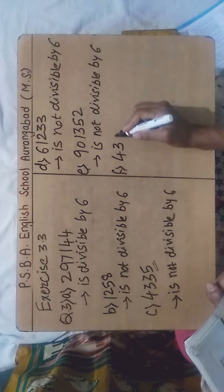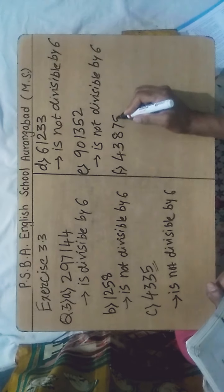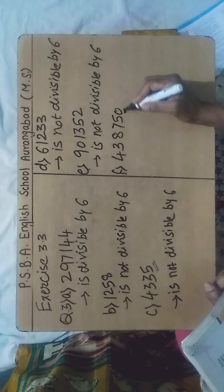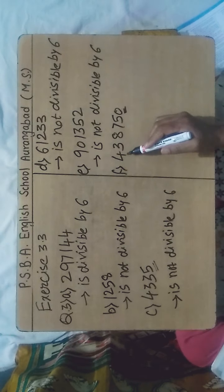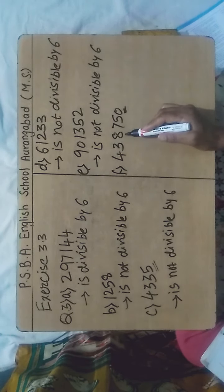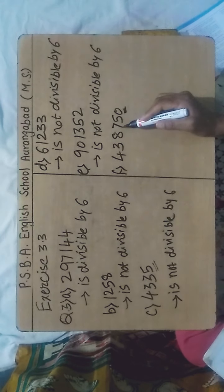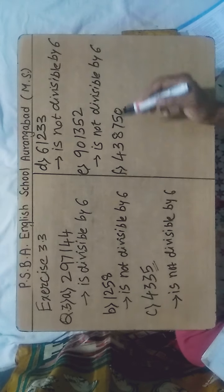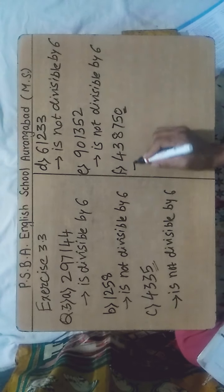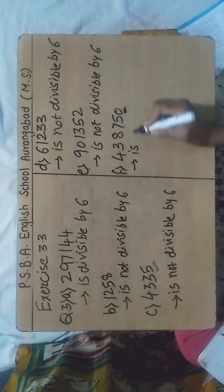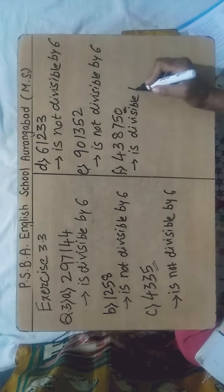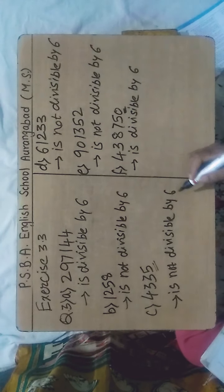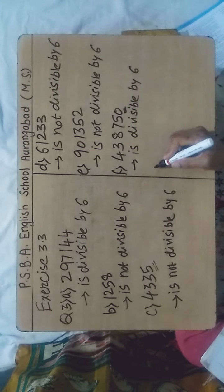Sub-question F: the number is 38,750. It is having 0 at its ones place, therefore it is divisible by 2. The sum of digits: 3+8+7+5+0 = 23... wait — 3+8 is 11, plus 7 is 18, plus 5 is 23... the sum comes to 27, which is divisible by 3. Therefore the above number is divisible by 6 because it is divisible by both 2 and 3.